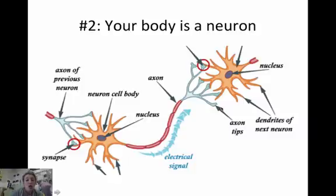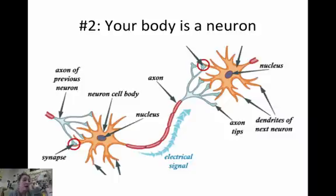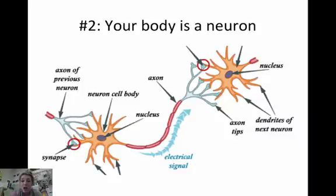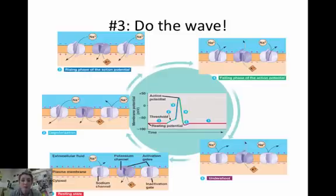Inside the axon terminal are vesicles that hold the neurotransmitters. The neurotransmitters get released and jump across the synapse, attaching to new receptors. Those receptors wait for enough of the message and then fire, generating a new action potential.